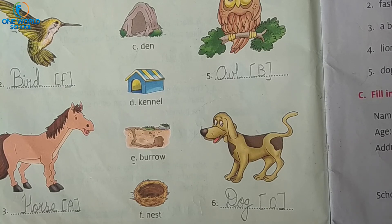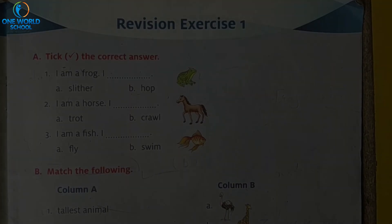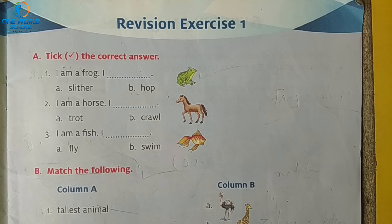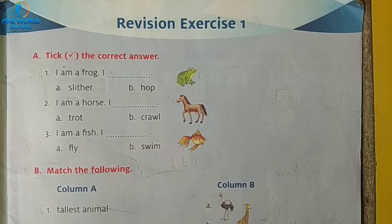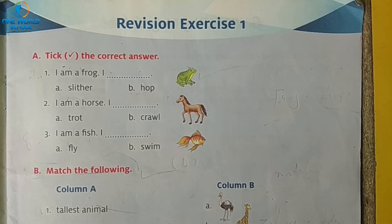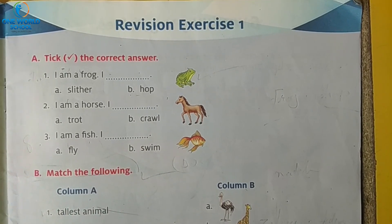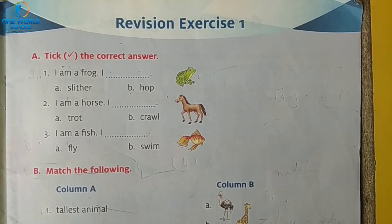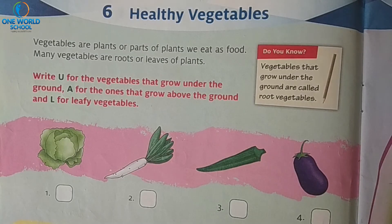Very good. Agar nahi kiya hai toh kar lena, thik hai? Now come to page number seven. Our page number seven is revision exercise number one. Ismein humne jo one to five lesson padhe hain, uska revision puchha gaya hai. Toh aapko yeh apne ghar pe complete karna hai. Now turn your page to page number eight — lesson number six diya gaya hai.